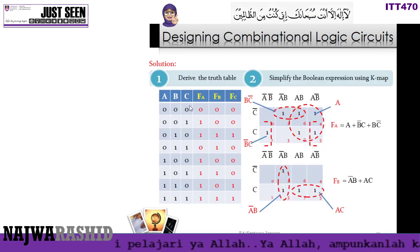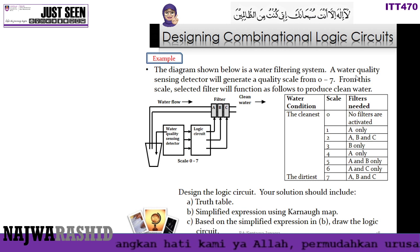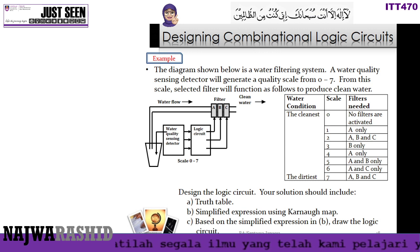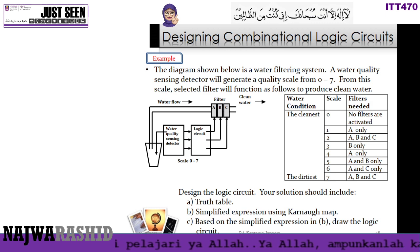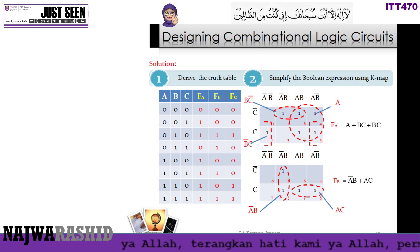For the first solution, draw the truth table. The water filter quality scale is 0 to 7, meaning 0 is binary 000 and 7 is binary 111, so there are 3 input variables. Based on the diagram, there are three filters: Filter A, Filter B, and Filter C. The truth table has three inputs A, B, C and three outputs: Filter A, Filter B, and Filter C.